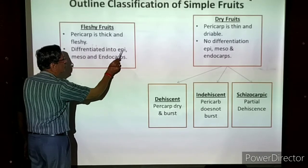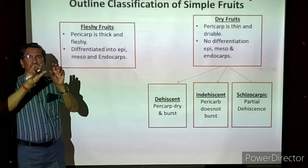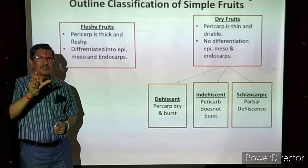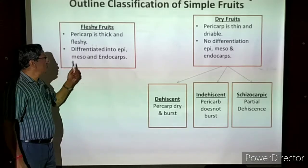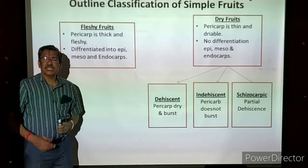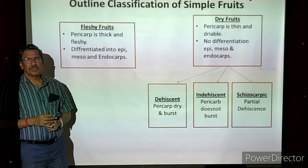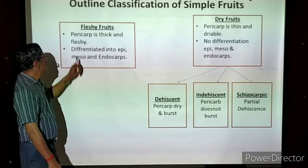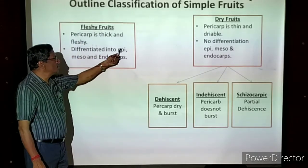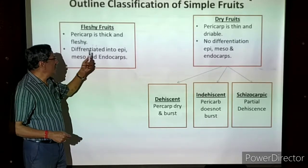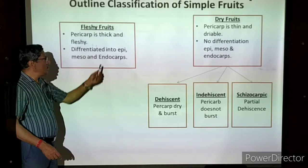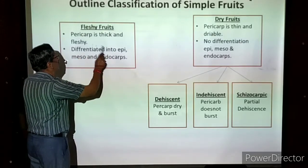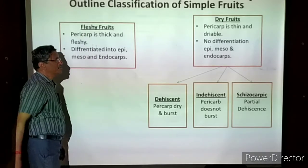The pericarp is differentiated into: epicarp — the outer skin, which is the yellow color skin present on the outside; mesocarp — the yellow, juicy, very thick and soft part in the middle; and endocarp — at the center, a very hard structure that is difficult to cut even with a knife. This is called the stony endocarp. If the pericarp is divided into these three divisions, it is a fleshy fruit.